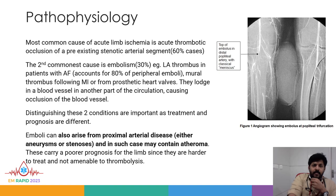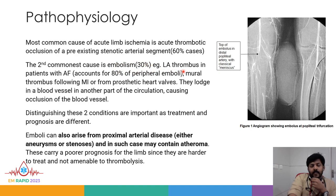The most common cause of acute limb ischemia is acute thrombotic occlusion of a pre-existing stenotic arterial segment, which accounts for almost 60% of cases. The second most common cause is embolism, around 30% of cases. For example, a left atrial thrombus in patients with atrial fibrillation accounts for around 80% of peripheral emboli.